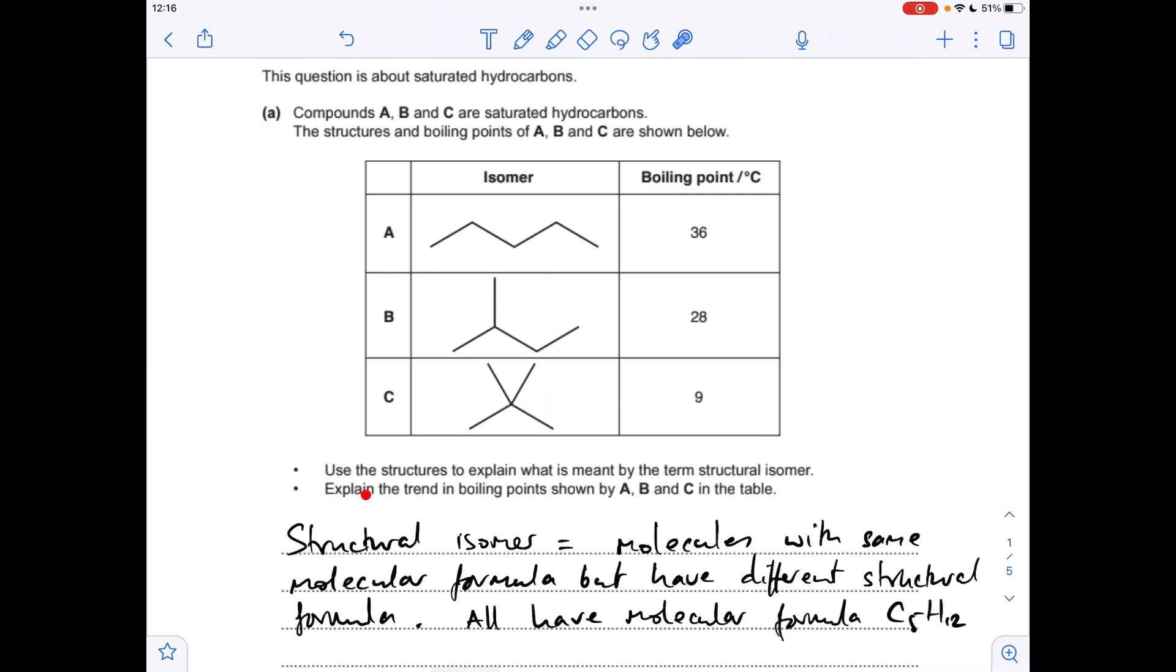We'll move on to the second bullet point now. Explain the trend in the boiling points shown by A, B, and C in the table. You can see that this is the unbranched one. It's got the highest boiling point. The most branched one has got the lowest boiling point. So a nice, simple trend there. The greater the degree of branching, the lower the boiling point.